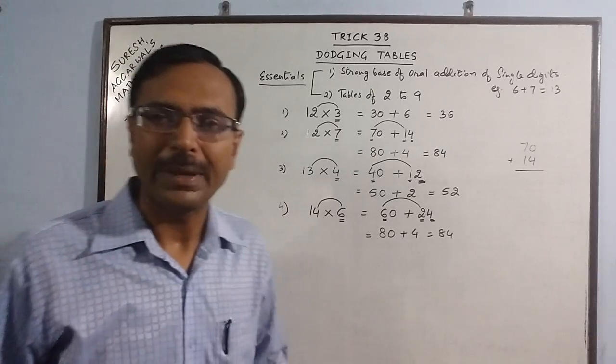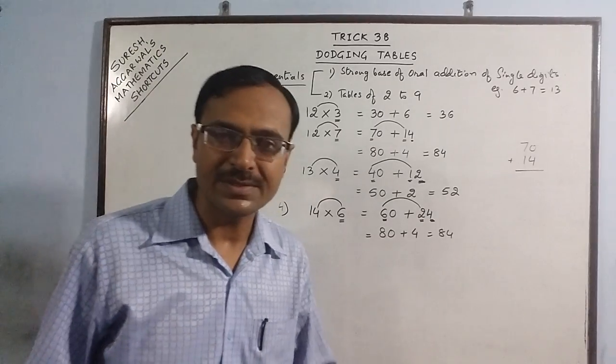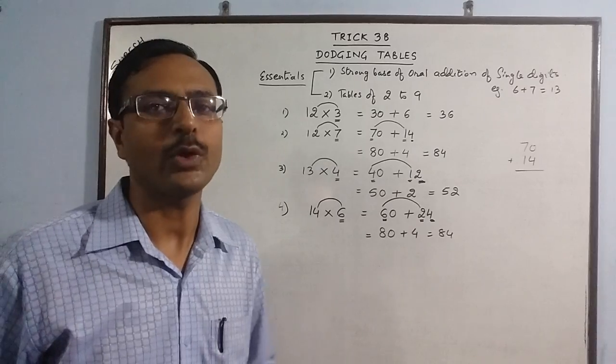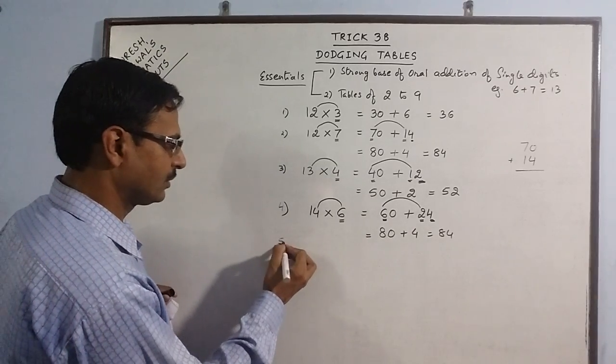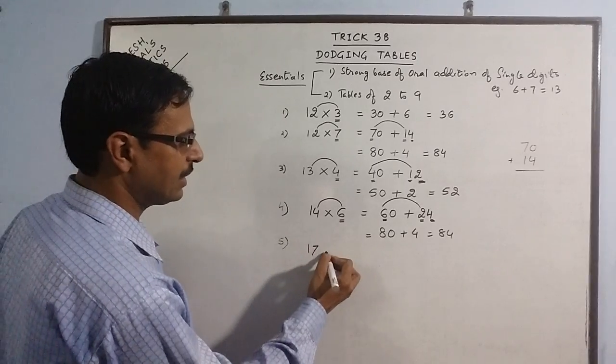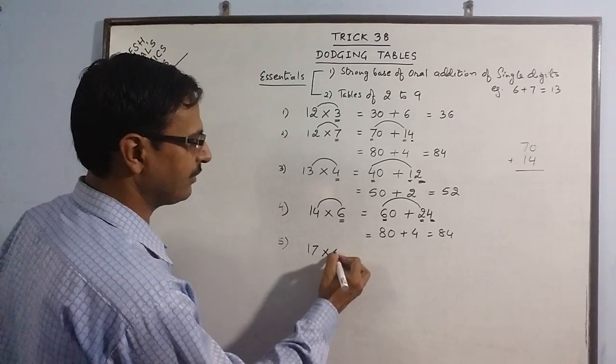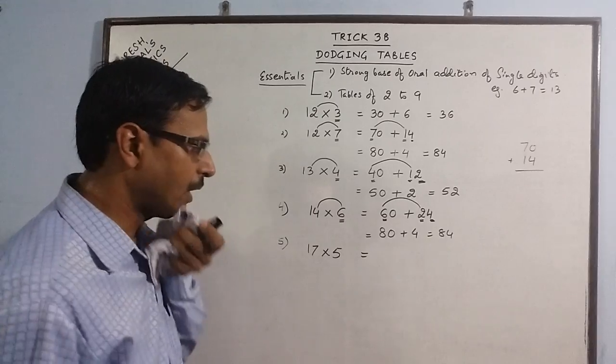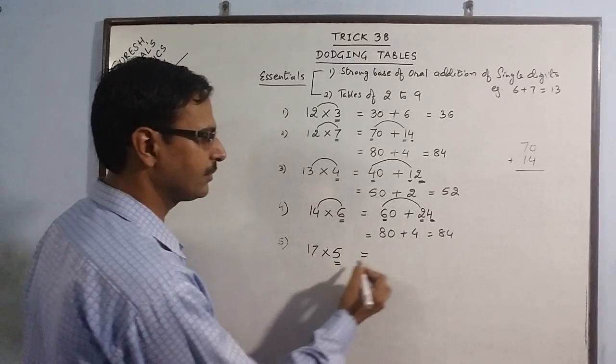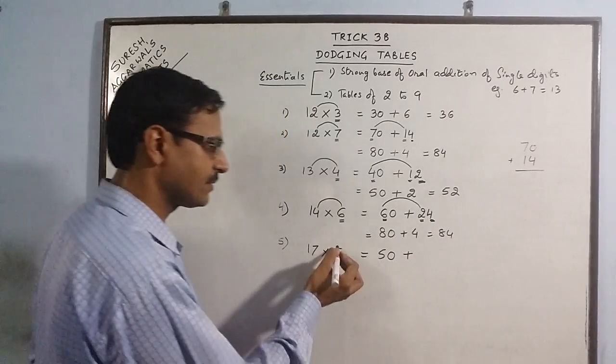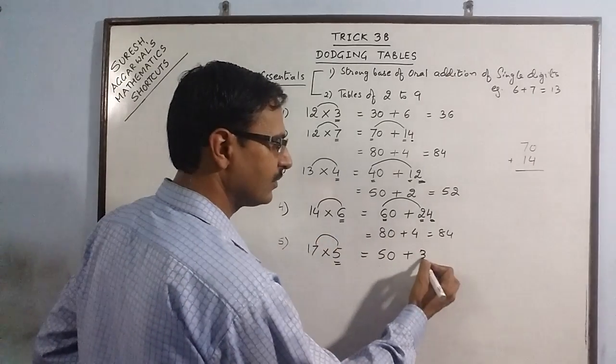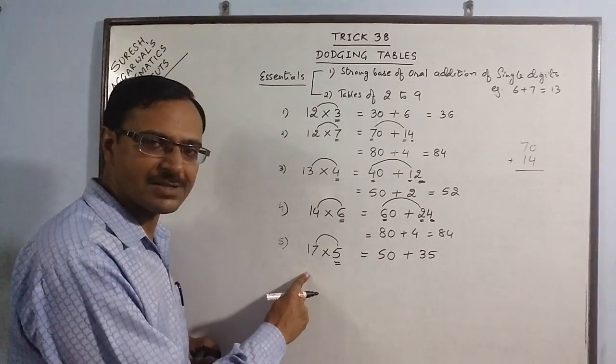Let us take one more bigger number, so that we are convinced that this method will work out for any larger number also. Say we have 17 into 5. We have 5 here, so 5 supplemented by a 0, plus 5 sevens are 35. See, we need single digit tables.